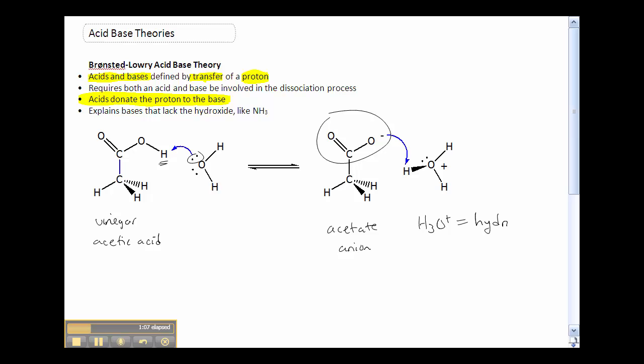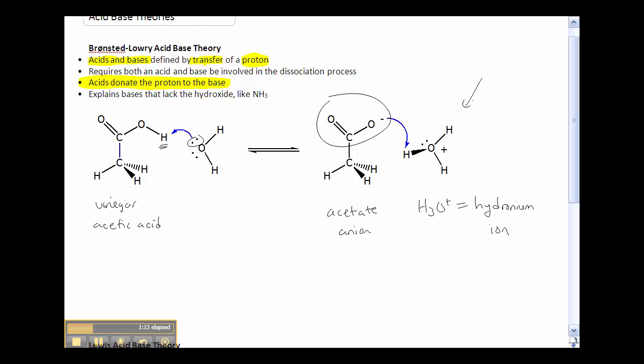H3O plus has a new name which you need to know, called the hydronium ion. As we were talking about in class, this species here absorbs light and therefore we know it must exist, rather than just a plain old H plus which was discussed before with the Arrhenius definition.